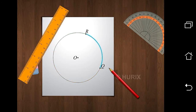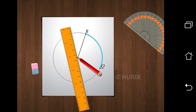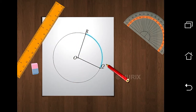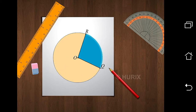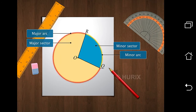When an arc of a circle is bounded by two radii, they form regions called sectors. The smaller sector, which is lesser than a semicircle, is called the minor sector and its corresponding arc is the minor arc. The larger sector, which is greater than a semicircle, is called the major sector and its corresponding arc is the major arc.